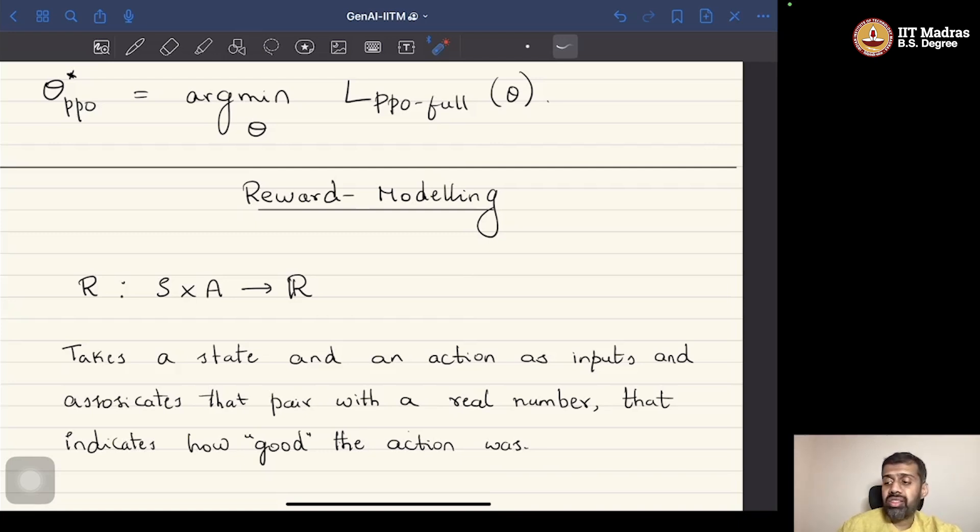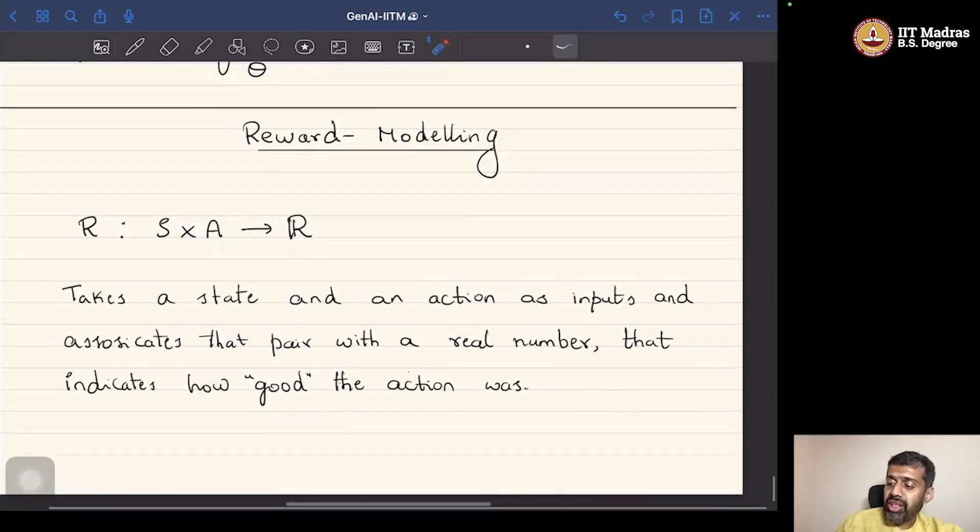Now, how is it done in practice is as follows. If you recall, the reward function was a function that operates on the cross product of the state space and the action space and maps it into a real number. Practically what it does is that it takes a state and an action as input and associates that state and action pair with a real number which signifies how good the action was. So, given a particular state and an action s, a it will give you some real number R that would tell us how good the given pair of state and action was.